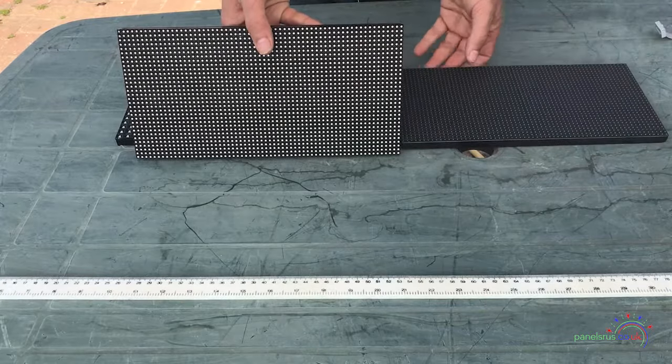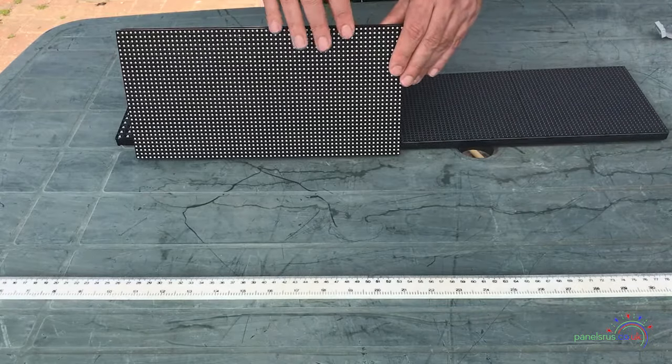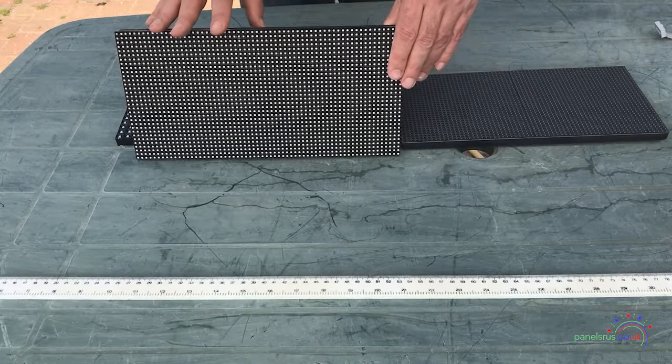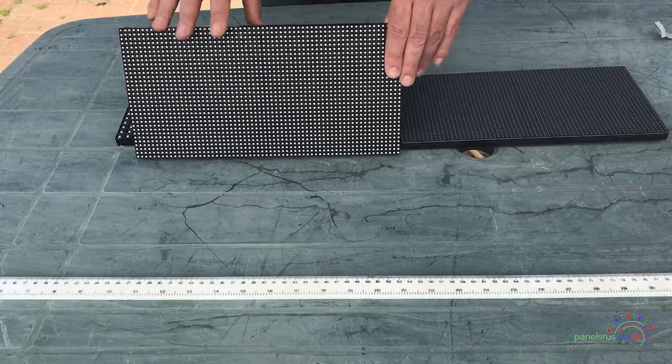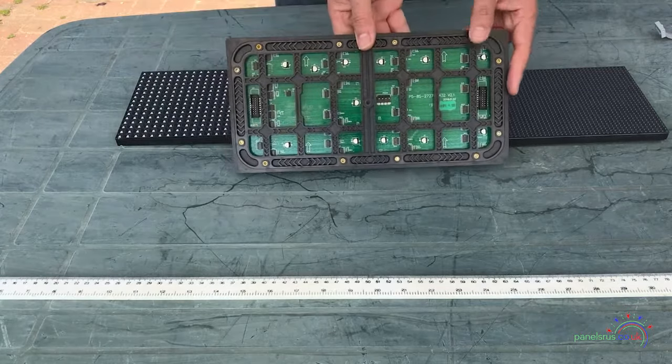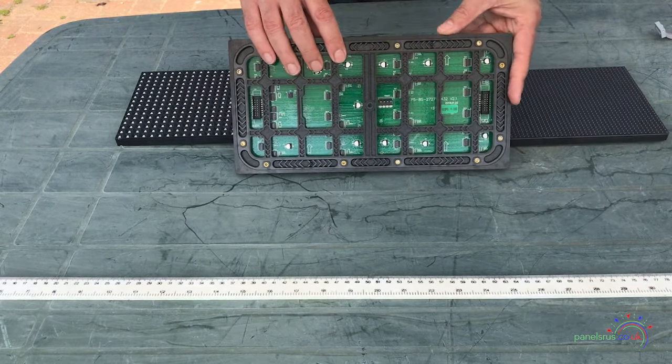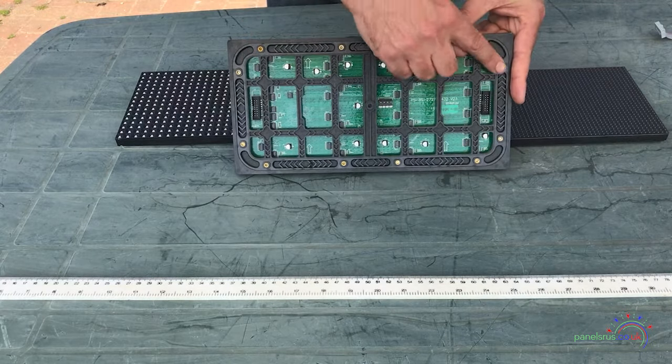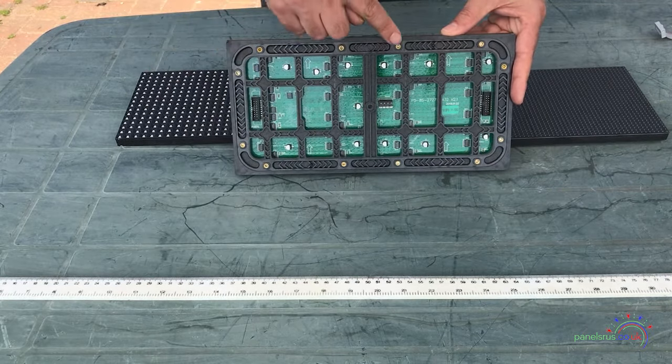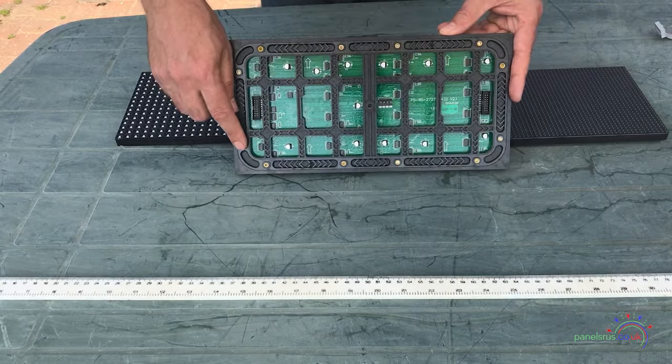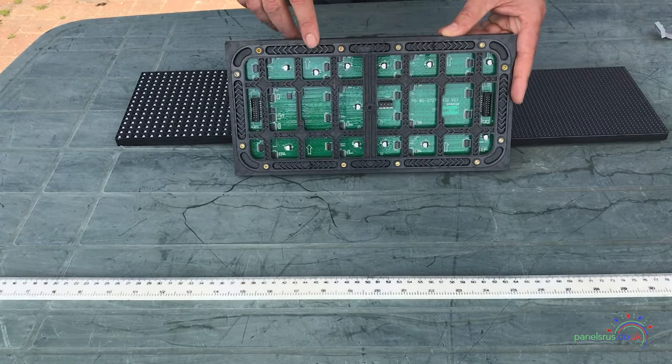Now the other thing to bear in mind is these waterproof or outdoor panels are water resistant at the front but they still have the electronics visible and accessible at the back. Now it's designed to have a waterproof membrane that's installed here and if you purchase them you will get the waterproof membrane.